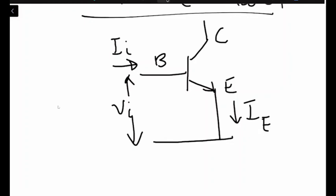The voltage between base and emitter we know is VBE. This is basically the input side of the system because the system has an input side and an output side. For the input side of the system, there is a current flowing into the system and the voltage applied between the two input ports.